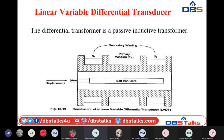The construction of the LVDT contains one hollow former. Inside at the center there is one soft iron core made of nickel and steel alloy. We have one primary winding and two secondary windings placed at identical distances on either side of the primary winding. To the primary winding we connect one alternating current source, because passive transducers require an energy source for their operation.